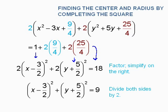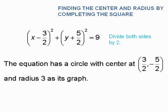To get center radius form, divide everything by 2. The final equation is x minus 3 halves quantity squared plus y plus 5 halves quantity squared equals 9. The center is 3 halves, negative 5 halves, and the radius is 3.